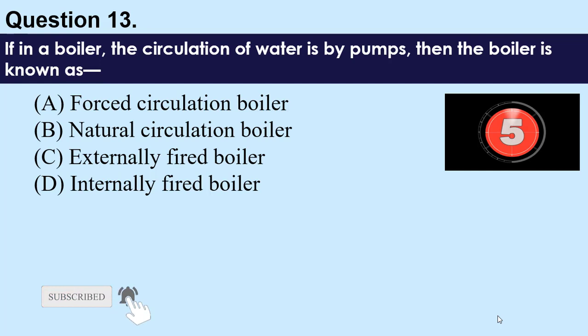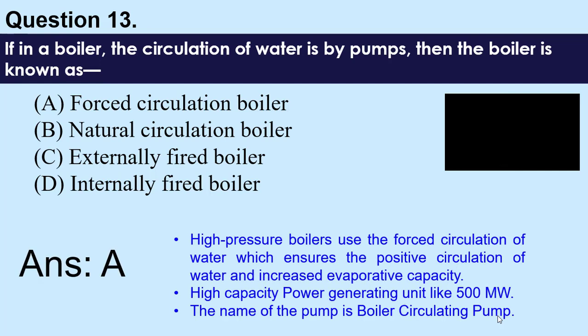Question number 13: If in a boiler the circulation of water is by pumps, then the boiler is known as — A) force circulation boiler, B) natural circulation boiler, C) externally fired boiler, D) internally fired boiler. The answer is A — force circulation boiler. In high-pressure boilers, forced circulation ensures positive water circulation and increased evaporative capacity. In high-capacity power generating units of 500 MW and above, forced circulation is used, and the pump is called a boiler circulating pump.